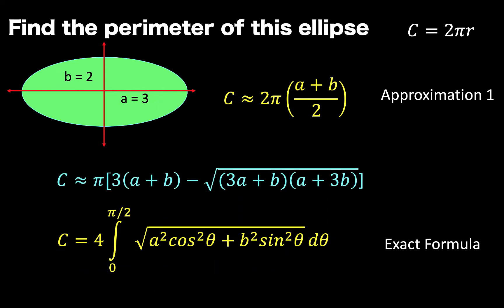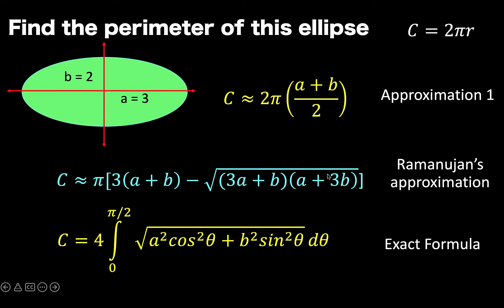Another formula we can use to approximate the perimeter of an ellipse is Ramanujan's approximation: C equals pi times 3 times the quantity a plus b minus the square root of the quantity 3a plus b times the quantity a plus 3b. And of course, we also have the exact formula involving definite integration.